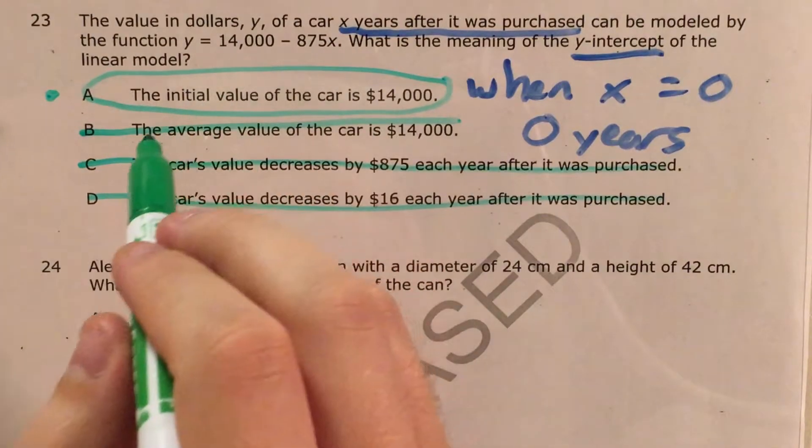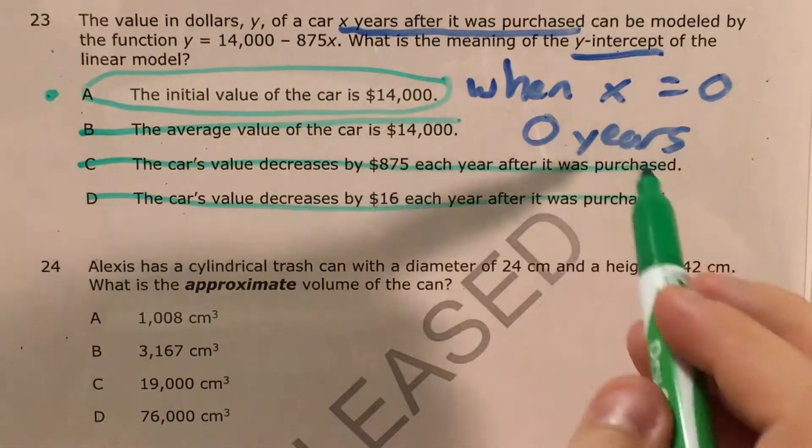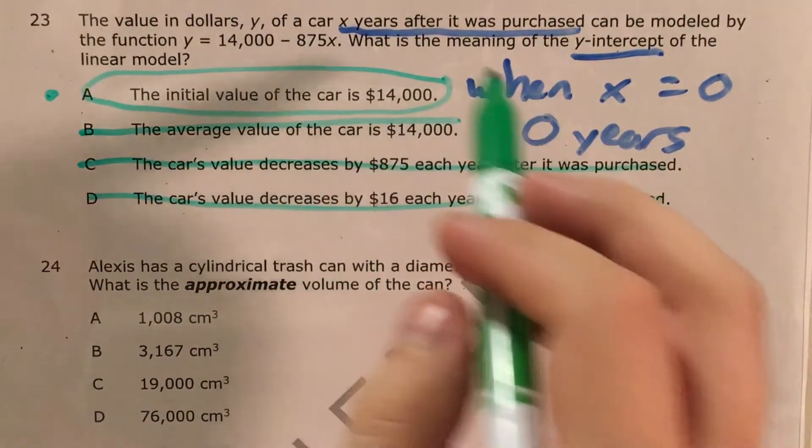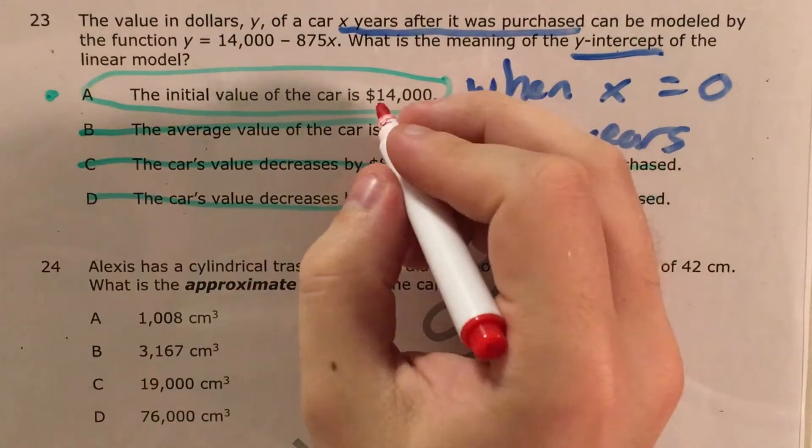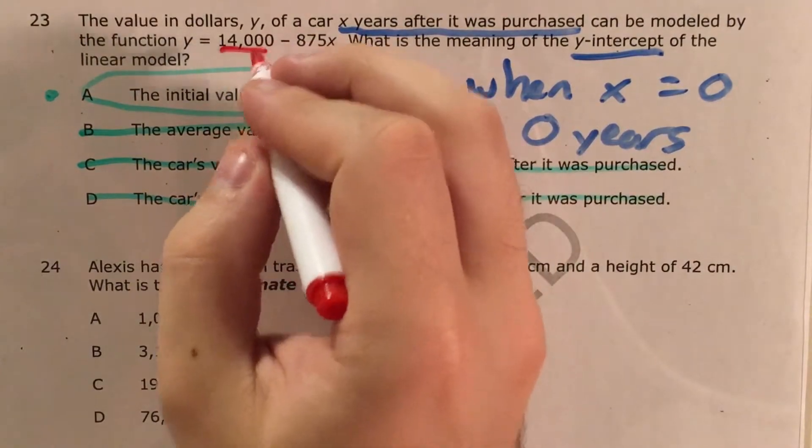The initial value of the car when you first buy it, when it's been driven for zero years, is $14,000. And that also matches this number here.